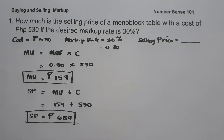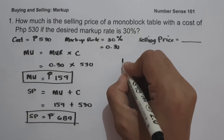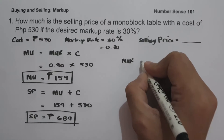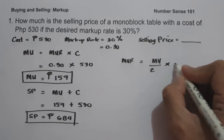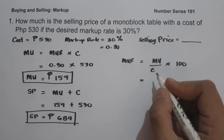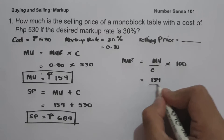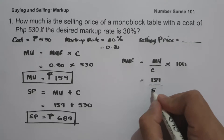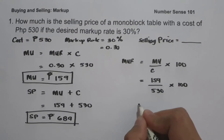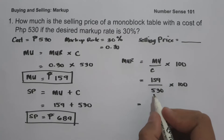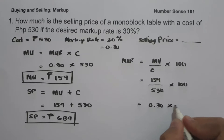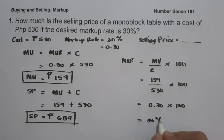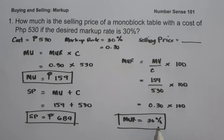And if you want to check your answer, let us use the formula: markup rate equals markup over cost multiplied by 100. Markup that is 159 over cost that is 530 times 100. 159 divided by 530 gives us 0.30, times 100 that is 30 percent. So as you can see, we come up with the same percentage of 30 percent.